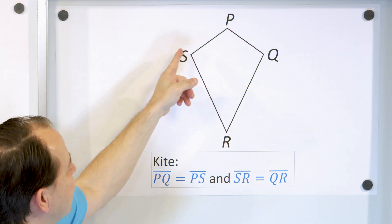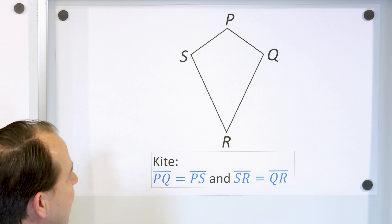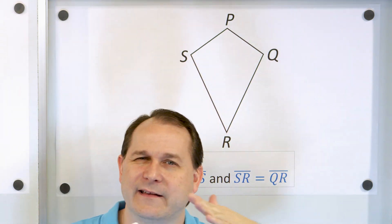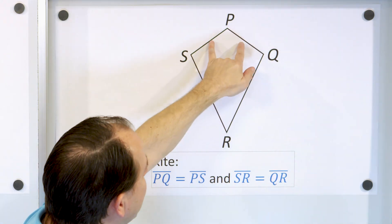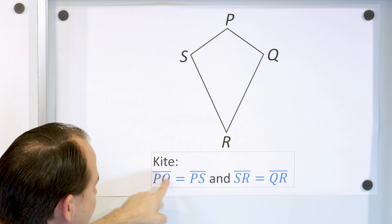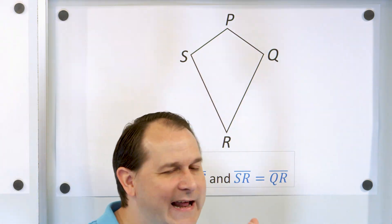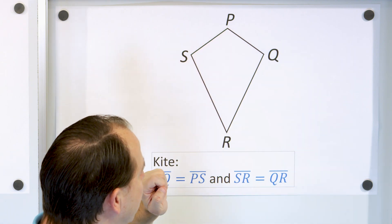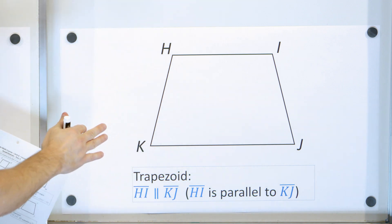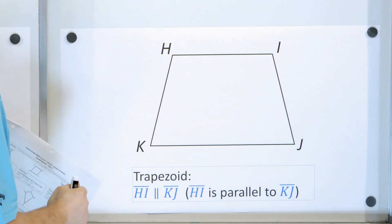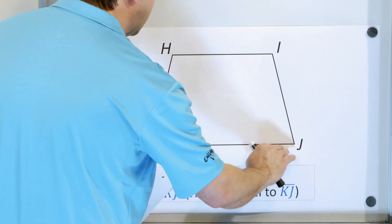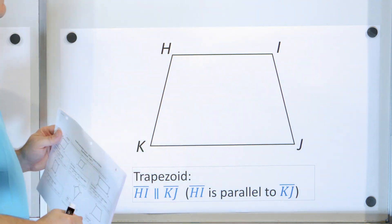Lastly, we have a kite — that's a four-sided figure as well. A kite is a quadrilateral where two of the adjacent sides, meaning the sides right next to each other, are equal. These sides are equal, and then these sides are equal. Basically a kite has that typical kite shape because these are equal and these are equal. And then finally, we have a trapezoid. A trapezoid kind of looks like a rectangle, but we don't have 90-degree angles. A trapezoid has one pair of parallel sides, but the other two sides are not parallel.